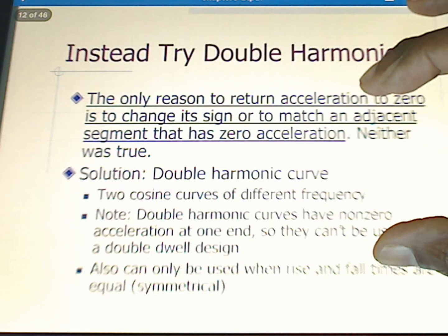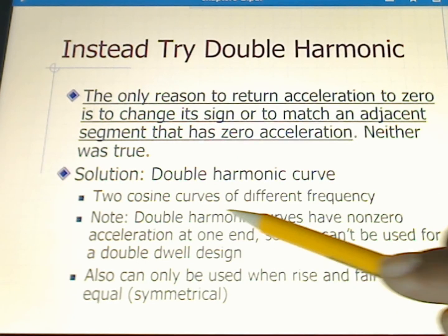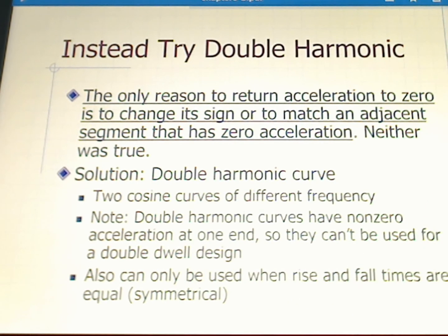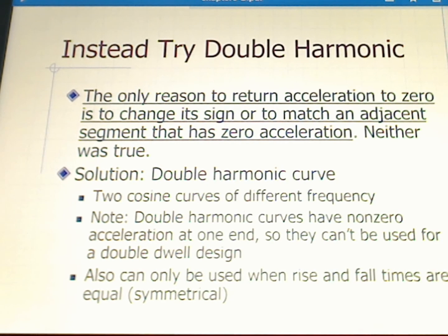So instead we're going to try a double harmonic. This is two cosine curves of different frequency. We'll start off by noting that the double harmonic curves have a non-zero acceleration at one end. So while they're good for the current case, they can't be used for a double dwell design as the SCCA family can be.